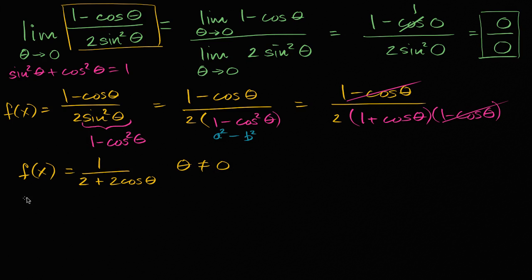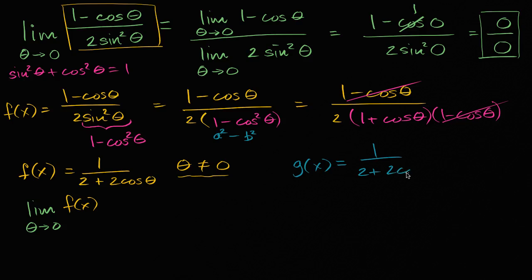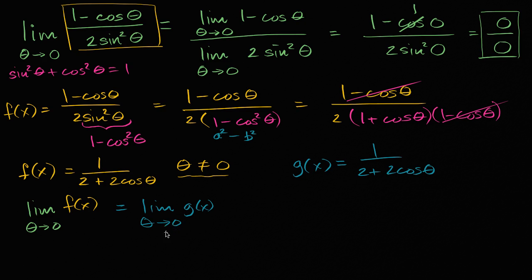But let's think about the limit again. We want the limit as theta approaches zero of f of x. We can't just do direct substitution into f of x, since f of x is not defined at zero. However, if we can find another function that is the exact same as f of x except at zero, and that is continuous at zero, then the limits will be the same. So we define g of x as one over two plus two cosine theta. These two functions are identical except f of x is not defined at theta equals zero while g of x is, so the limits as theta approaches zero are going to be equivalent.